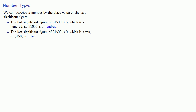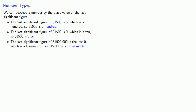And finally, if I write 31500.000, the last significant figure is the last zero, which is in the thousandths place. So this number 31500.000 is accurate to the thousandths.